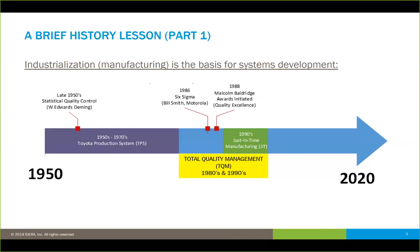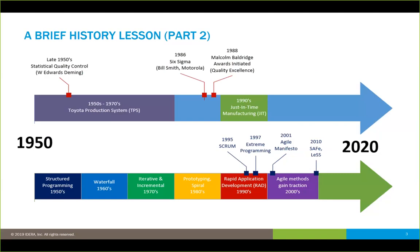That ultimately led to a higher focus on quality, with things like the Malcolm Baldrige Quality Awards initiated in 1988. That was really driving improvements in manufacturing and industrial process, and we saw it as a springboard for things like just-in-time manufacturing, which started in the 80s but really gained popularity in the 90s. All these principles tied across into the way that we've actually developed systems over the years as well.